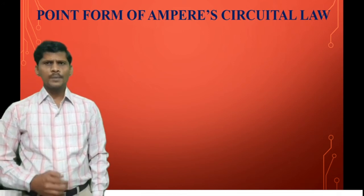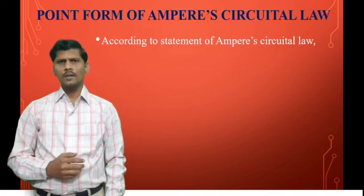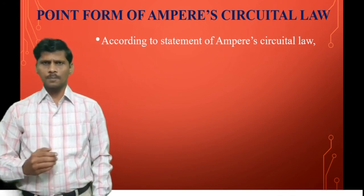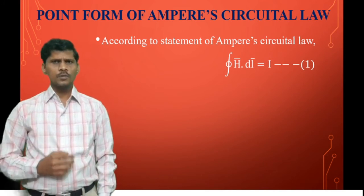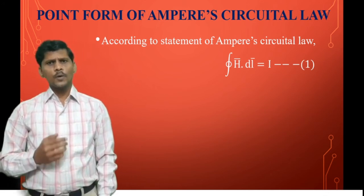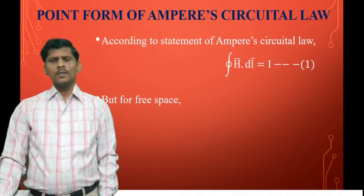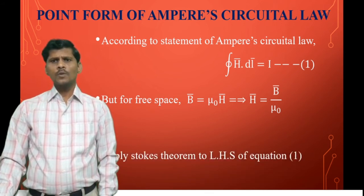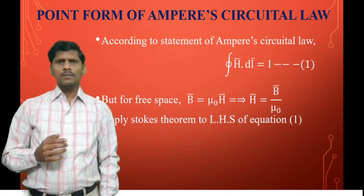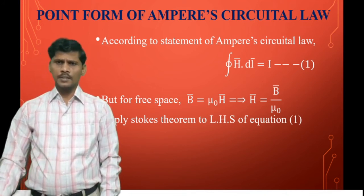Next is the point form of Ampere's circuital law. According to the statement of Ampere's circuital law, the closed line integral of H̄·dl̄ is equal to the current enclosed — this is the integral form of Maxwell's equation. To find the differential or point form, we use Stokes' theorem: the closed line integral of H̄·dl̄ equals the open surface integral of (∇ × H̄)·dS̄.